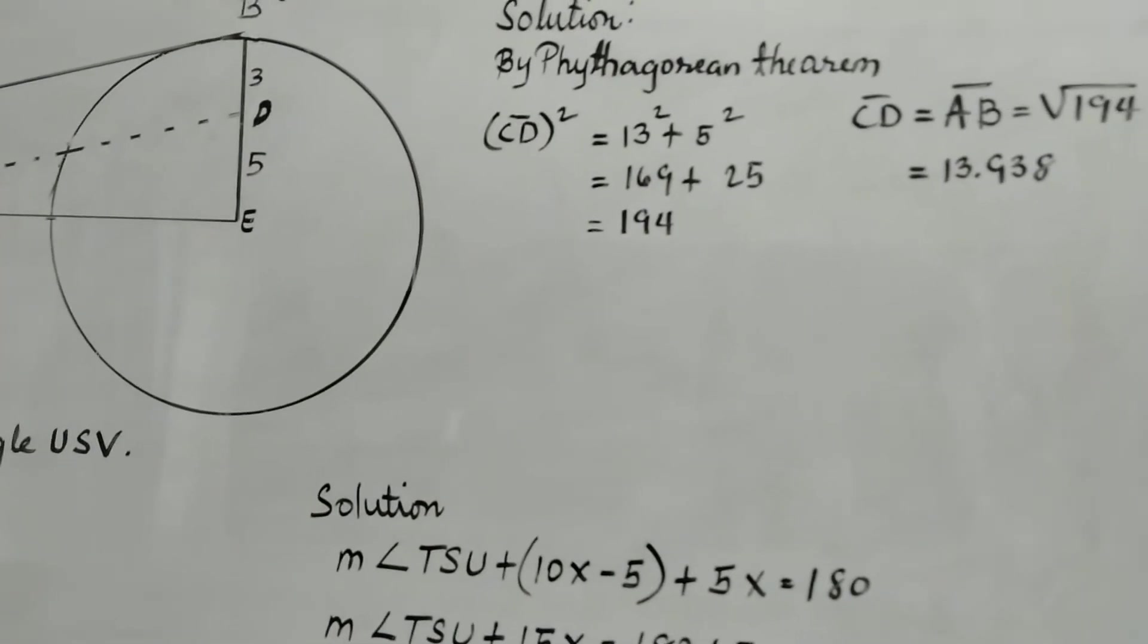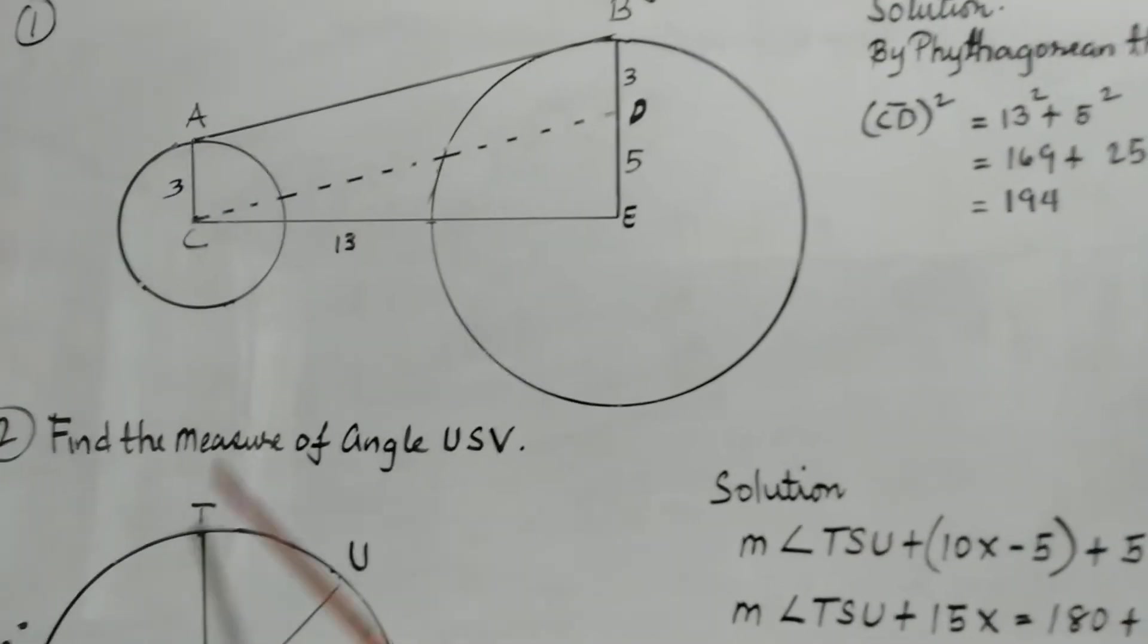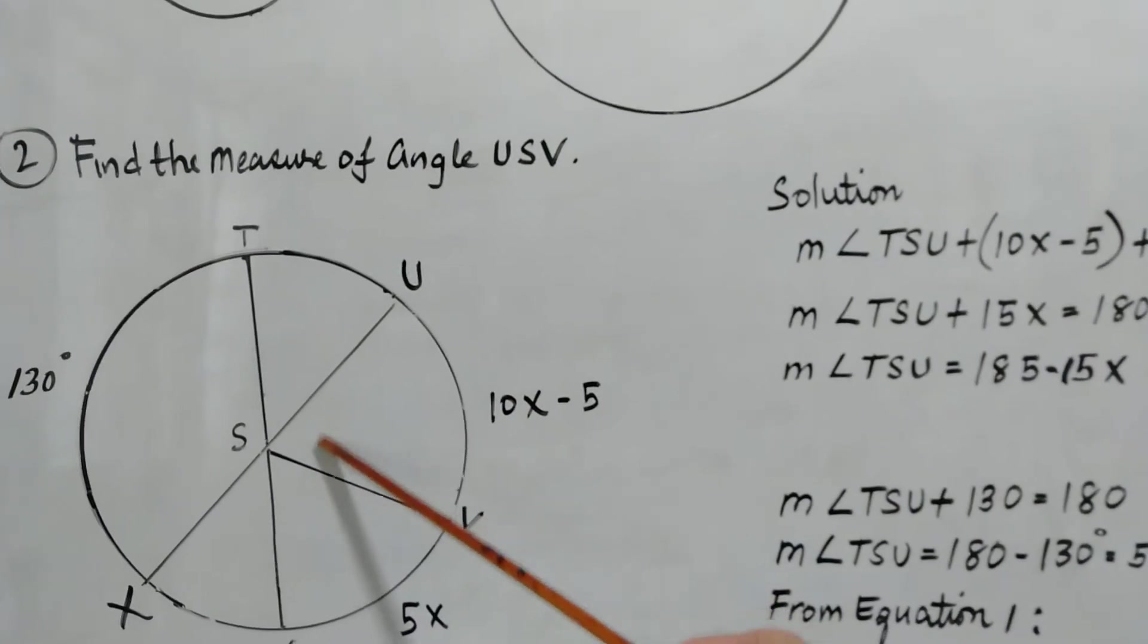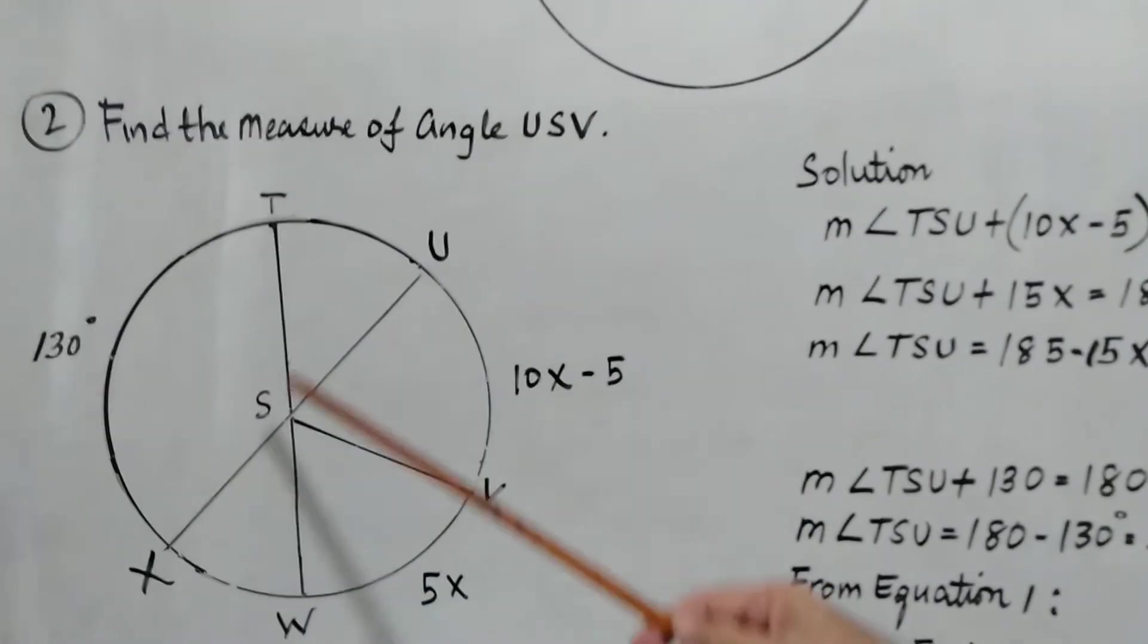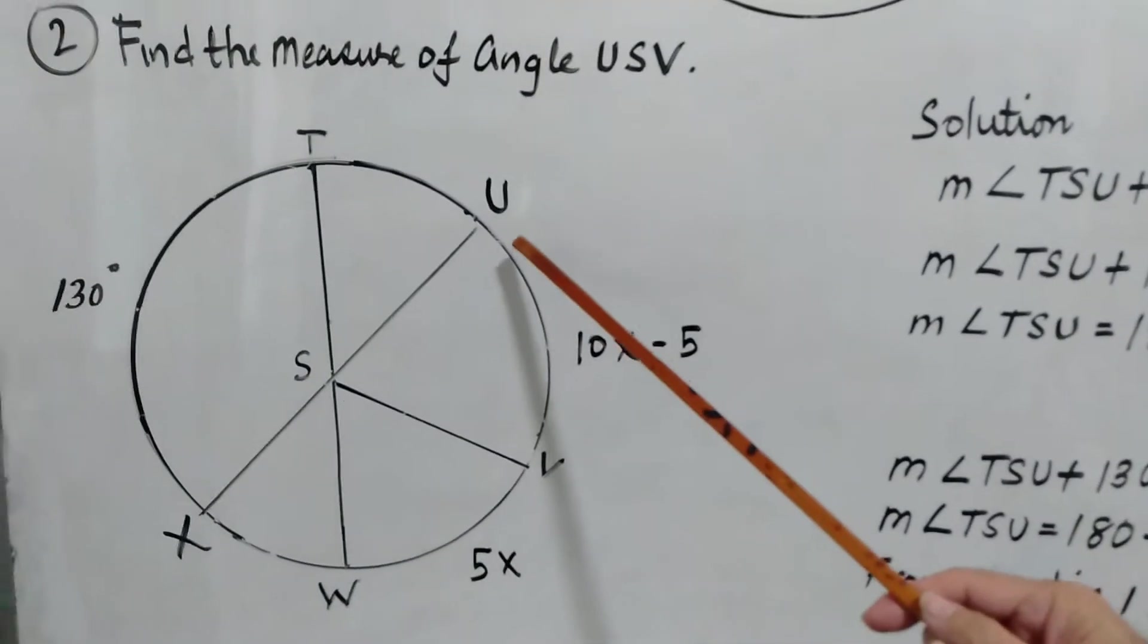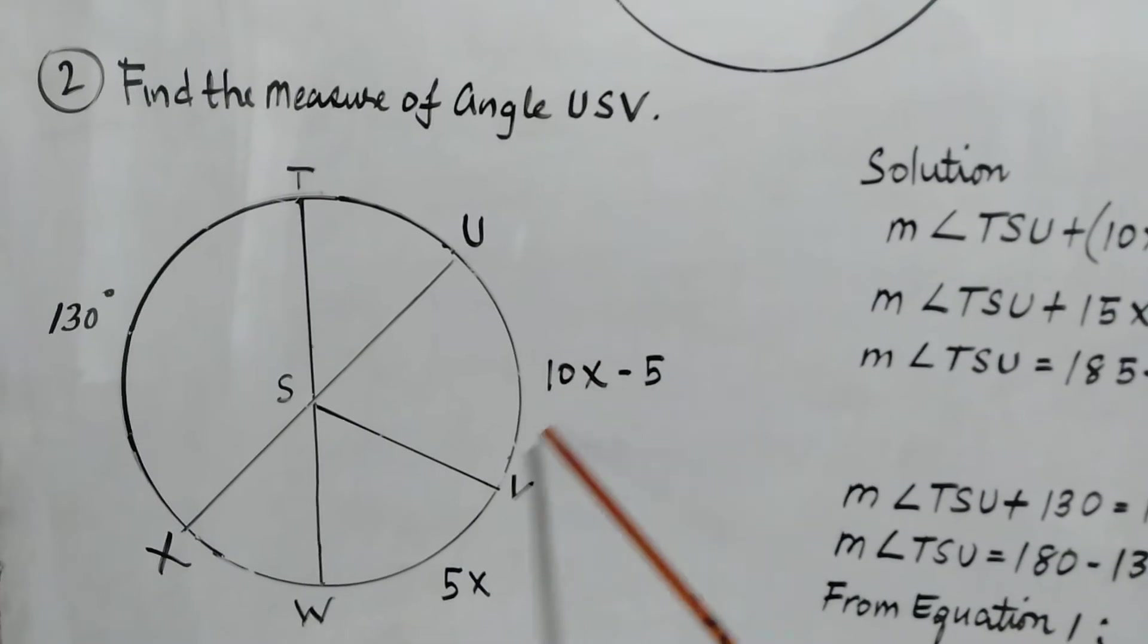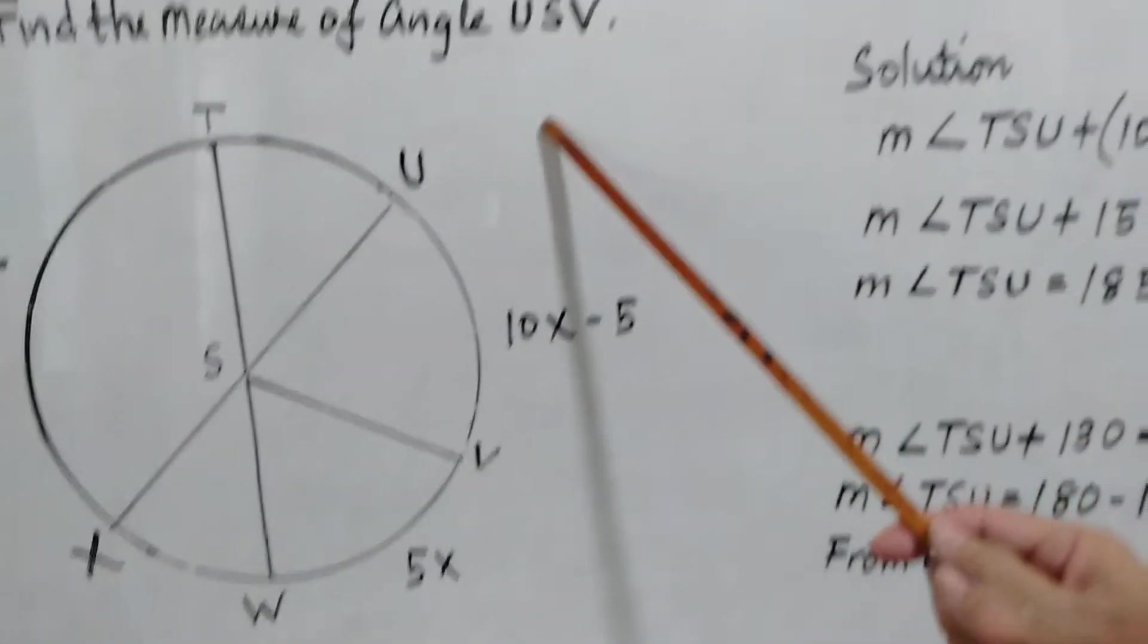So we're going now to the second problem. We have one circle here, and we are asked to find the measure of angle USV. So this is the central angle, and we are given here, arc TX is equal to 130 degrees, and arc UV, which is 10X minus 5. This 10X minus 5, the arc UV, is equal to the central angle USV, the unknown part of the circle here.